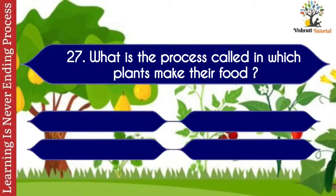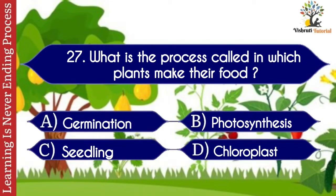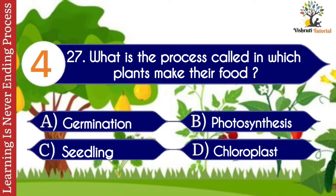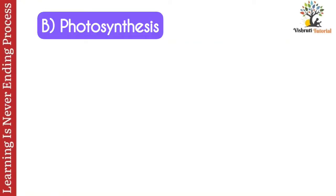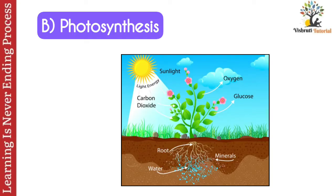Question number twenty-seven: what is the process by which plants make their food? Options: A. Germination, B. Photosynthesis, C. Seedling, D. Chloroplast. The correct answer is B. Photosynthesis. Photosynthesis is the process in which plants make their food.